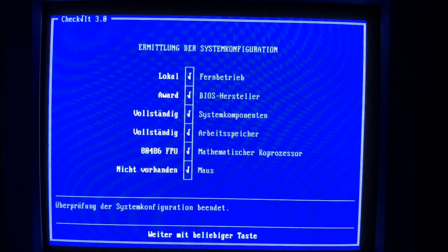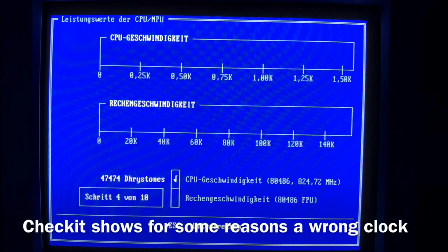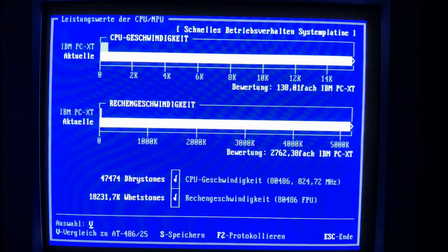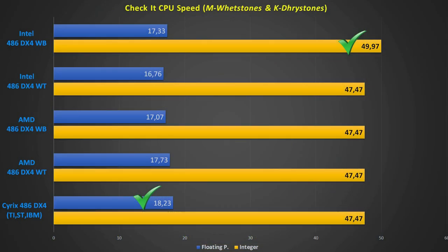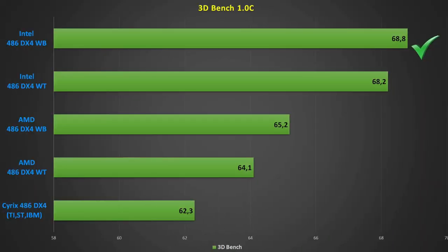Next is Checkit for integer and floating point tests, giving Drystones for integer and Kilo Whetstones for floating point. Intel with write-back cache takes the lead in integer calculations, and surprisingly Cyrix has the strongest floating point unit — I'm curious if this will show up in the Quake benchmark since Quake heavily uses the FPU. For 3DBench, Intel write-back leads with 68.8 FPS, the other Intel is 0.6 FPS behind, AMD is 3–4 FPS behind, and Cyrix is last at 62 FPS.